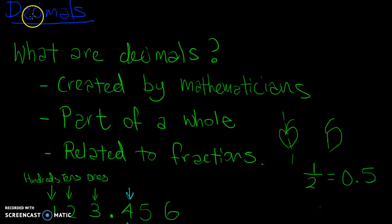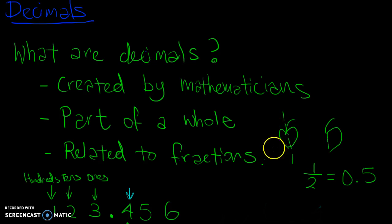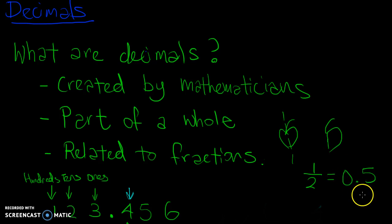Today we're going to talk about decimals and I'm going to explain what decimals are. Decimals are actually created by mathematicians — it's actually another way to represent part of a whole number. For example, if I have an apple and I split it in half and give you half an apple, you can say you receive 0.5 of an apple. So decimals are created by mathematicians to represent part of a whole.